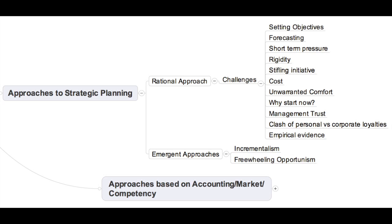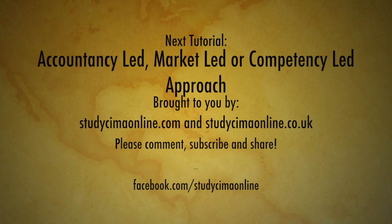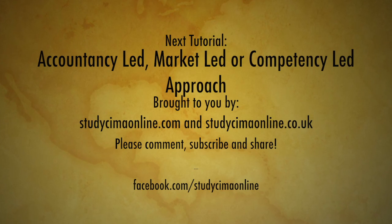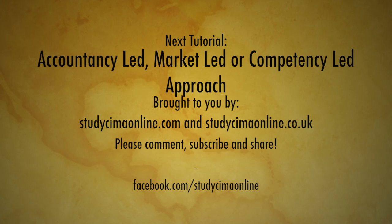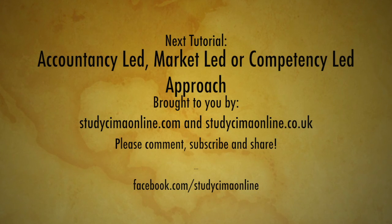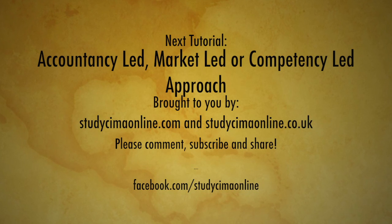Number two is freewheeling opportunitism. Businesses following this approach exploit whatever opportunity comes their way, capitalising on the success of one step and moving to the next. This is justified by the fact that the whole environment is changing so fast it cannot be predicted, and a quick response to an existing market opportunity yields higher returns than spending time and money on a planning process that might produce a plan obsolete in no time. This tutorial is brought to you by StudySimaOnline.com and StudySimaOnline.co.uk. In the next video, you will study planning approaches based on accountancy-led, market-led, or competency-led approaches.